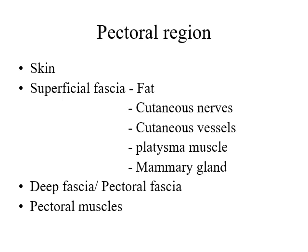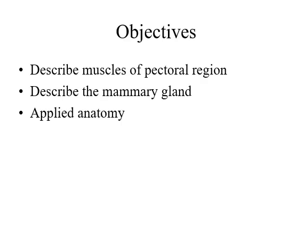Deep to the superficial fascia, you will get the deep fascia, called the pectoral fascia. Deep to the pectoral fascia, you will get the pectoral muscles. The objectives of today's session are to describe the muscles of the pectoral region, the mammary gland, and the applied anatomy. There are three muscles: pectoralis major, pectoralis minor, and subclavius.